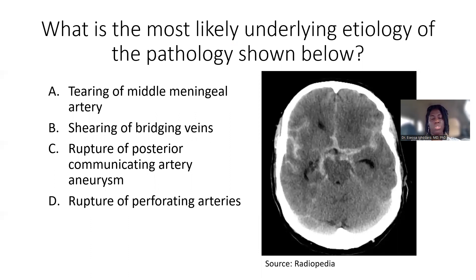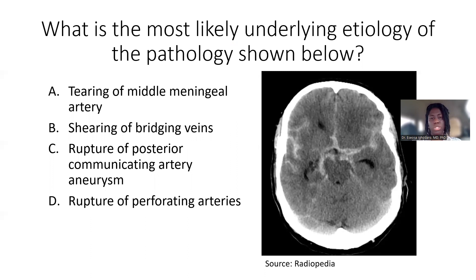This is the type of question you will see studying for your neurology shelves or taking USMLE 1, 2, and 3. This is a second-order question — the first order is recognizing what kind of brain bleed is shown in the image, and the second order is knowing the underlying etiology. As you move along in your step exams, questions get more advanced: USMLE 1 asks first and second-order questions, USMLE 2 tends to ask third-order questions, and USMLE 3 asks multi-step third and fourth-order questions. Having a strong foundation in key topics is essential as the material builds on itself.